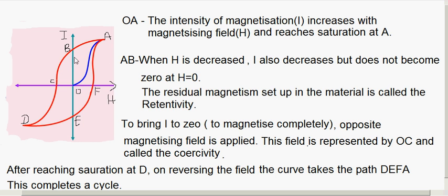Though H reduces to 0, I does not become 0 at point B. When H is decreased, I also decreases but does not become 0 at H equal to 0. At point B, H is 0 whereas I is not 0. The residual magnetism set up in the material is called retentivity. This residual magnetism OB, which is left in the material when H is reduced to 0, is called retentivity.